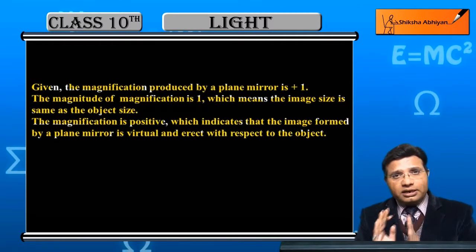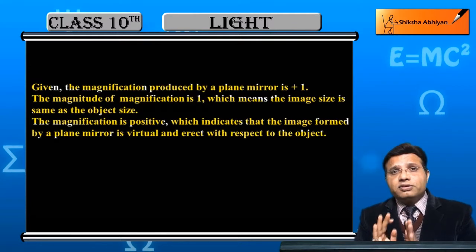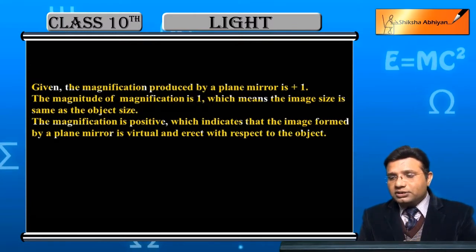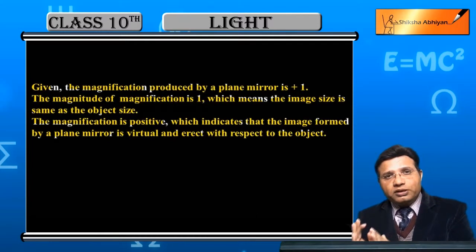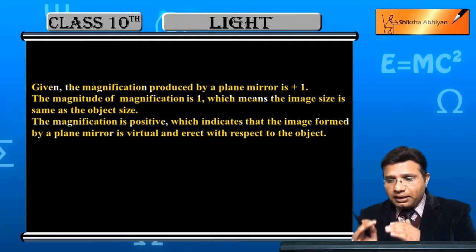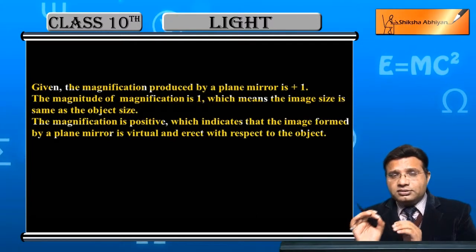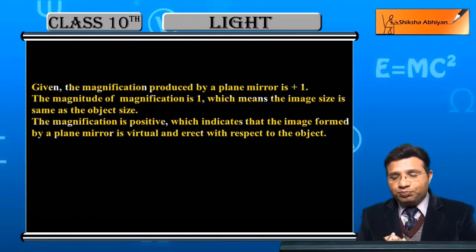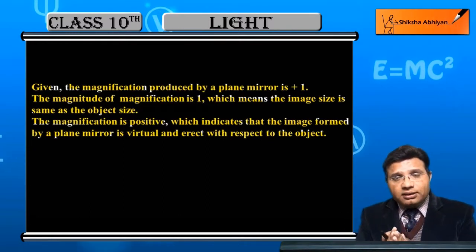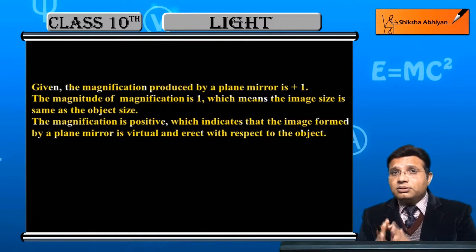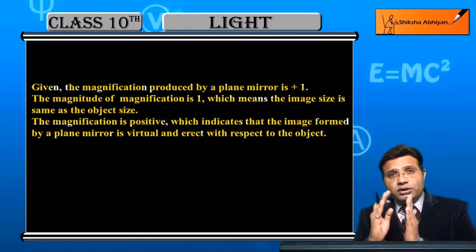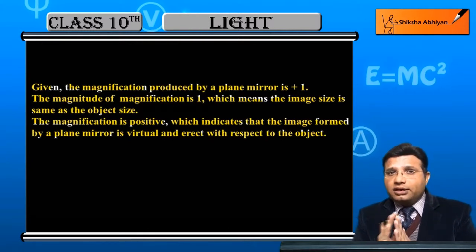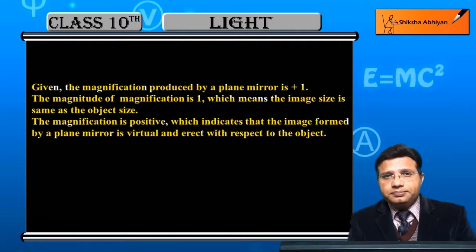Remember that a plane mirror always forms a virtual and erect image. So the magnification value of plus 1 has two meanings. First, the value 1 means the object size and image size are the same. Second, the positive sign means that the plane mirror always forms a virtual and erect image.